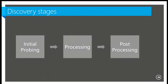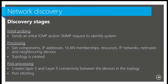When running discovery there are three stages. First is the initial probing — we make sure we can access the device and it's responding. Then processing — I'll show what we do there. Once we finish processing, we go to post-processing where we do port stitching. In initial probing we send an ICMP and/or SNMP request. You need SNMP enabled to query the device, but you can do SNMP only if ICMP is disabled. By default we do both. In processing we find all components, query them, and create the topology.